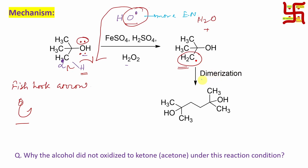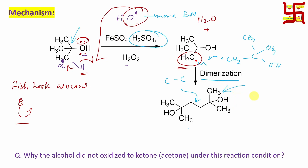This radical undergoes dimerization. Another molecule — another same radical — comes closer and they dimerize. One comes here, another comes here, resulting in a C−C bond formation, producing a diol. This is also a tertiary alcohol. You may think that since sulfuric acid is present, why doesn't it undergo dehydration-elimination? The reaction conditions are adjusted in such a way that protonation is possible, but dehydration followed by elimination does not occur. So the C−C bond results in a 1,2,3,4 — specifically 2,3-dimethyl-2,3-butanediol (a diol) preparation.